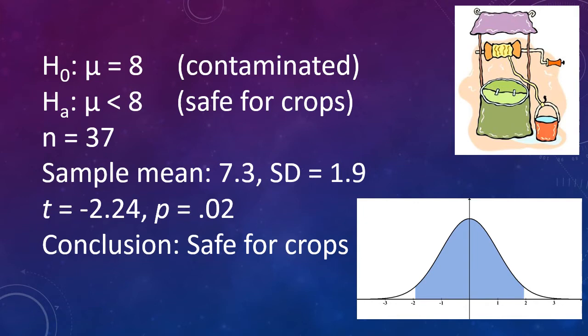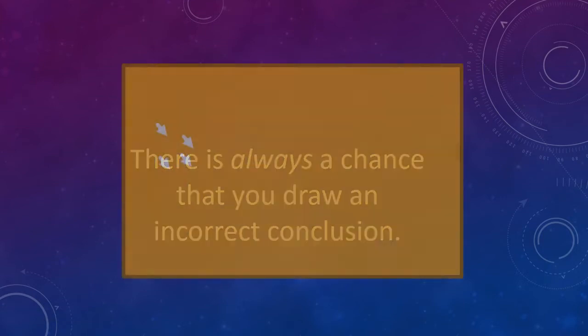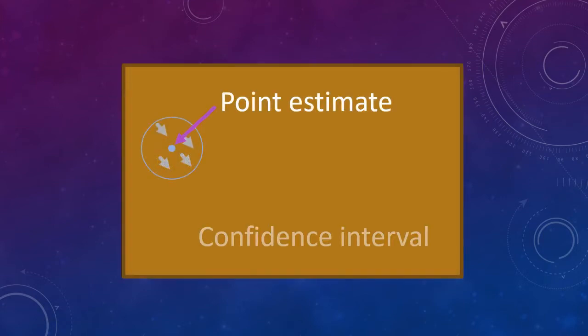In statistical inference, there is always a chance that you draw an incorrect conclusion. Think back to our discussion of confidence intervals. We said that a sample statistic was a point estimate, or the best guess for a population parameter. But we know that the sample statistics are not exactly the same as a population parameter. There's some variability in the sample statistic from study to study. This variability, how far off the point estimate is from the population parameter on average, may be greater for some studies, like those with small sample sizes, than for other studies.